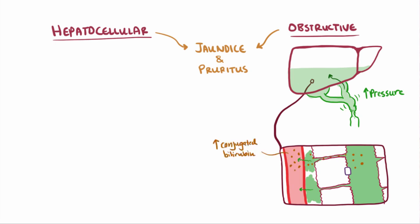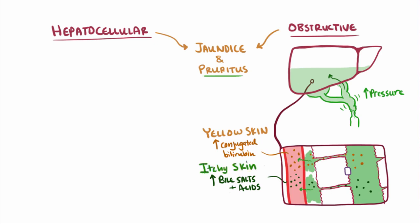Conjugated bilirubin will therefore get into the blood, leading to the yellowed skin tone that's indicative of jaundice. Bile salts, another main ingredient of bile, can cause pruritus by depositing in the skin, making it itchy and irritated. Not only that, cholesterol can also deposit in the skin and lead to buildups called xanthomas.